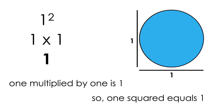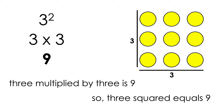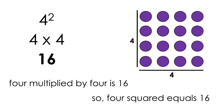ooh na na. 1 multiplied by 1 is 1, so 1 squared equals 1. 2 multiplied by 2 is 4, so 2 squared equals 4. 3 multiplied by 3 is 9, so 3 squared equals 9. 4 multiplied by 4 is 16, so 4 squared equals 16. Ooh.